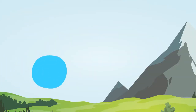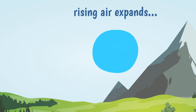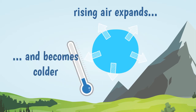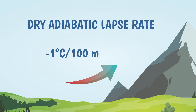When air is pushed up a mountain, the drop in pressure allows the air to expand. But to expand, the air has to give out some energy to its surroundings, and this causes it to become colder. This process is known as adiabatic cooling and causes the temperature of the rising air to drop at a rate of approximately 1 degree Celsius for every 100 meters of elevation. This rate is known as the dry adiabatic lapse rate.